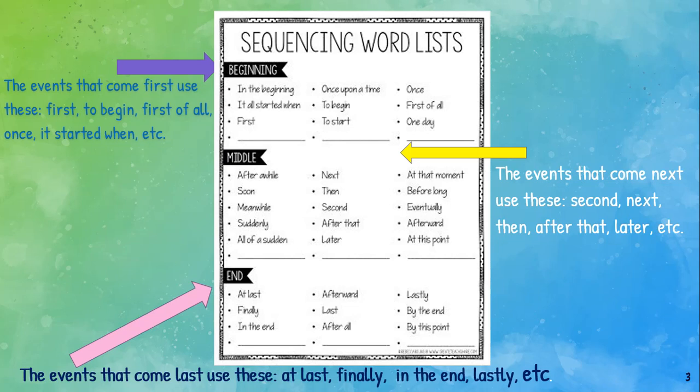And finally, at the end of your story or your sequence — the events that come last — use words like: at last, finally, in the end, afterward, last, after all, lastly, by the end, and by this point. This page has a lot of helpful words for you to use in your writing when you need to sequence things. You will be doing an activity later, so you might want to take a good look at this page for word ideas. You can write down your favorites, or just remember them.